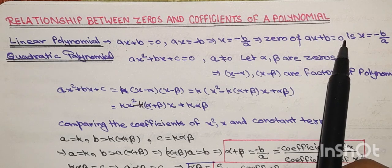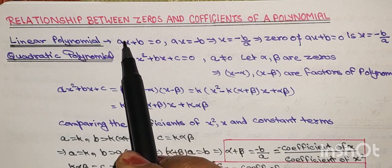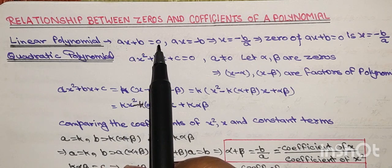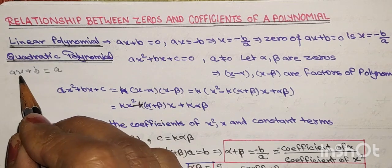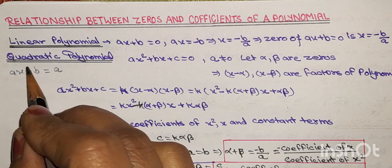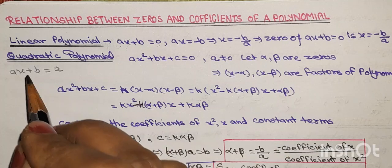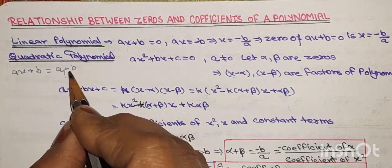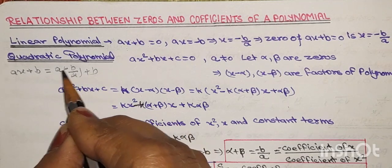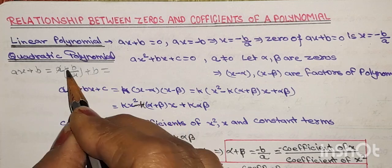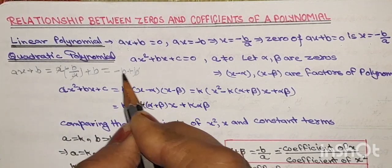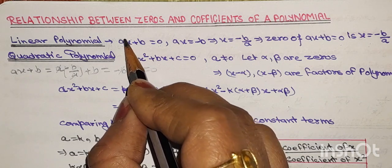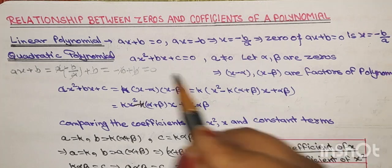So zero of ax plus b is minus b upon a. Agar hum x ke place par minus b upon a put kar denge — a into (minus b upon a) plus b — toh a se a cancel out ho jaega, equal to minus b plus b, that equals zero. So minus b upon a is zero for this given polynomial.